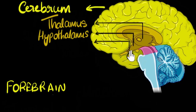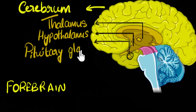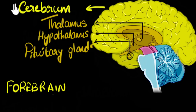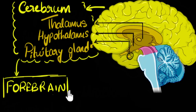This last part — this small thing you can see over here — is called the pituitary gland. So these are the four parts of our forebrain that we'll concentrate on: the cerebrum, thalamus, hypothalamus, and pituitary gland.